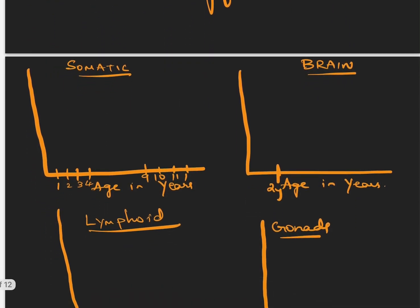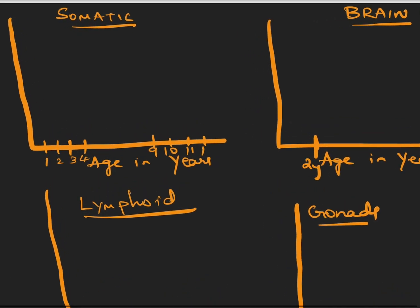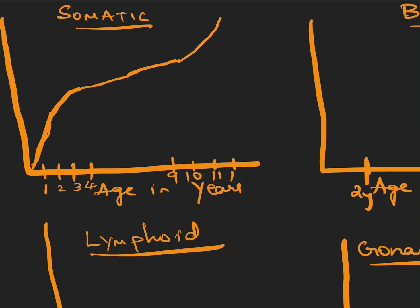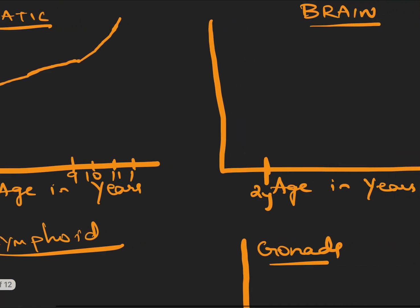We differentiate tissue growth into somatic, brain, lymphoid, and gonadal growth. Somatic growth is very high in the first two to three years of life. After that the growth is still occurring but not as steep — it almost plateaus. Then, during puberty, there is a second peak in somatic growth.